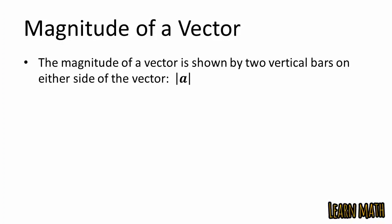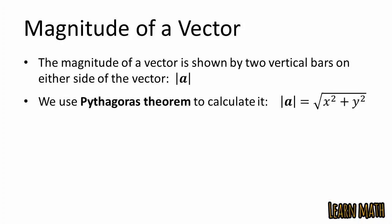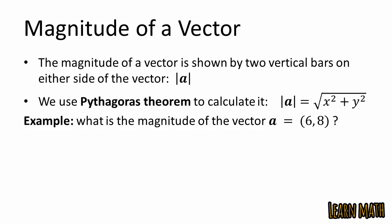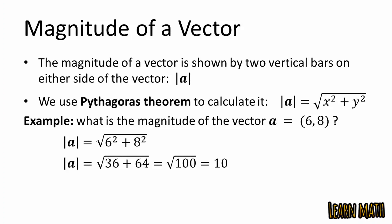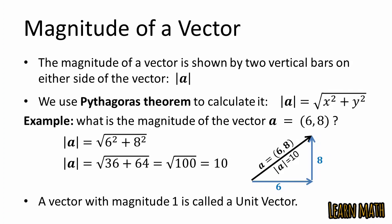The magnitude of a vector is shown by two vertical bars on either side of the vector. We use the Pythagorean theorem to calculate it: magnitude equals the square root of x squared plus y squared. For example, if vector A equals (6, 8), then the magnitude equals the square root of 6 squared plus 8 squared, which is the square root of 36 plus 64, equals the square root of 100, which equals 10.